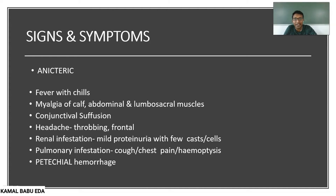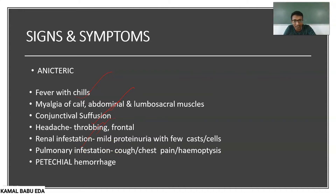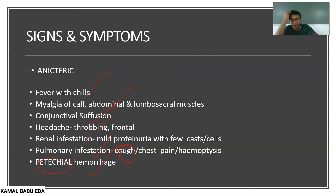Signs and symptoms of anicteric leptospirosis include fever with chills, myalgia of calf muscles, abdominal and lumbosacral muscle pain, and conjunctival suffusion. Headache is throbbing and mostly in the frontal region. Renal manifestations include mild proteinuria and in some cases cast cells. Pulmonary involvement may also be present with cough and chest pain. Hemoptysis and petechial hemorrhage may also be present — petechial hemorrhage means bleeding from tiny spots on the skin, which can also occur in dengue, so differential diagnosis is necessary.